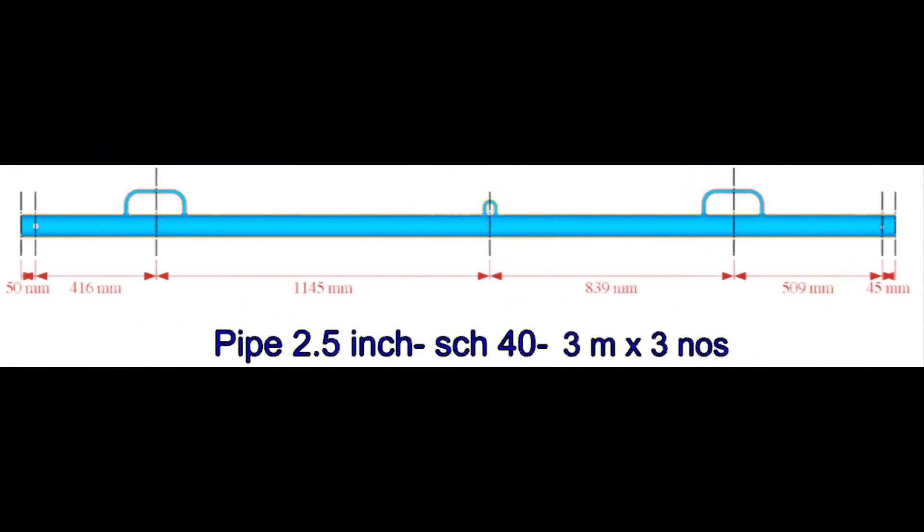The lugs of the tripod are made from 2.5-inch, 40-schedule pipe. The length of each leg is 3 meters each.